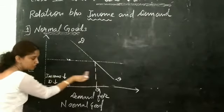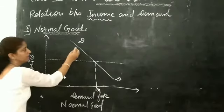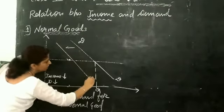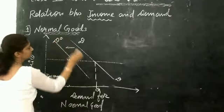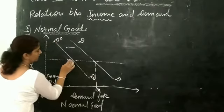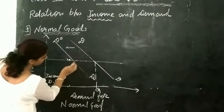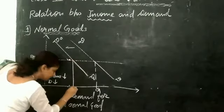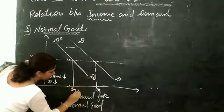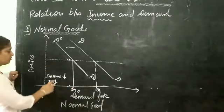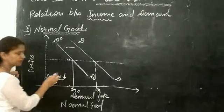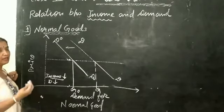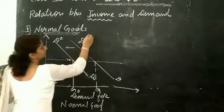When demand decreases, the demand curve shifts towards the origin — from D-D it shifts in that direction. The new demand curve is D0-D0, and the decreased demand is Q0 because of the fall in income.